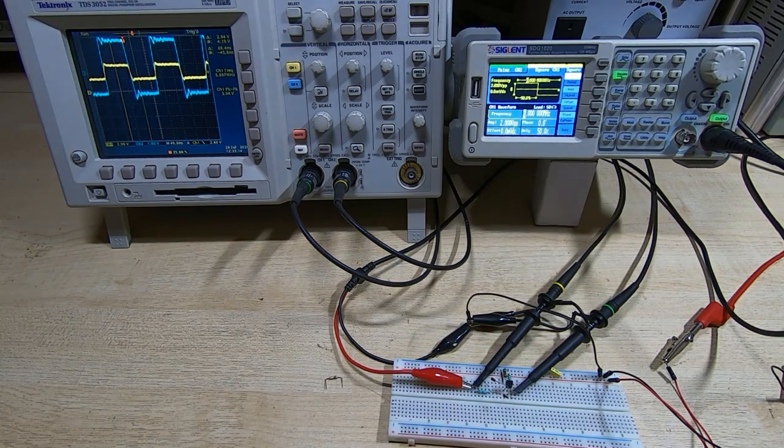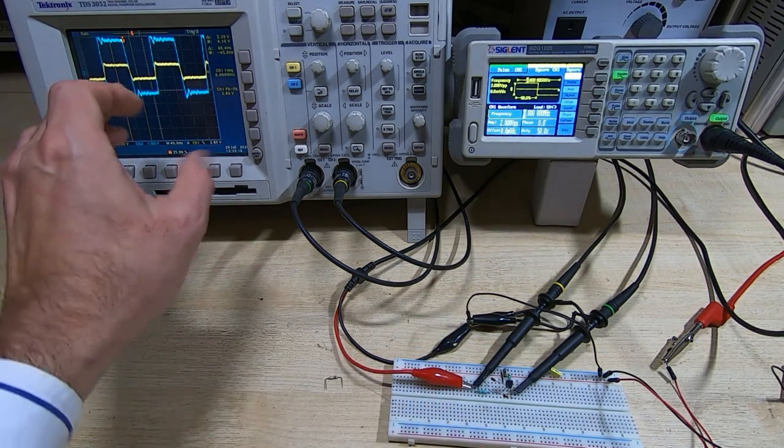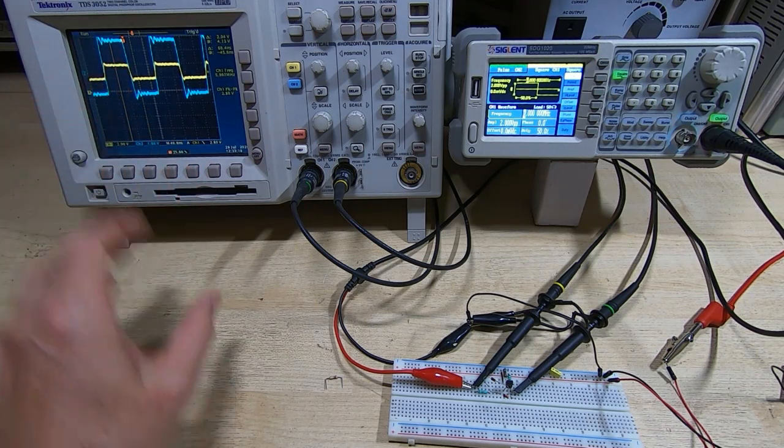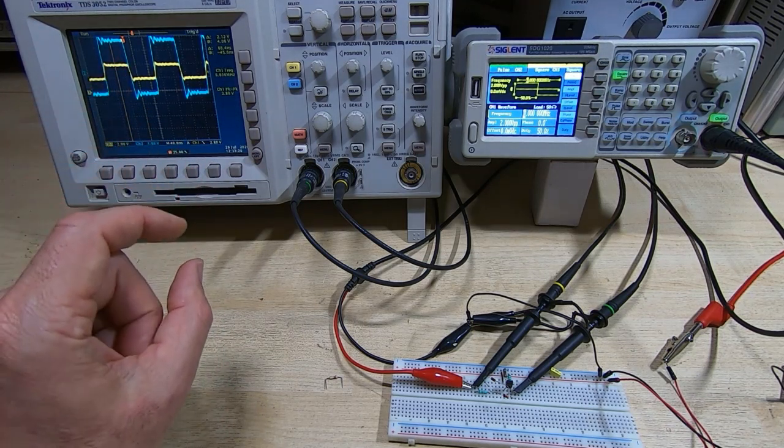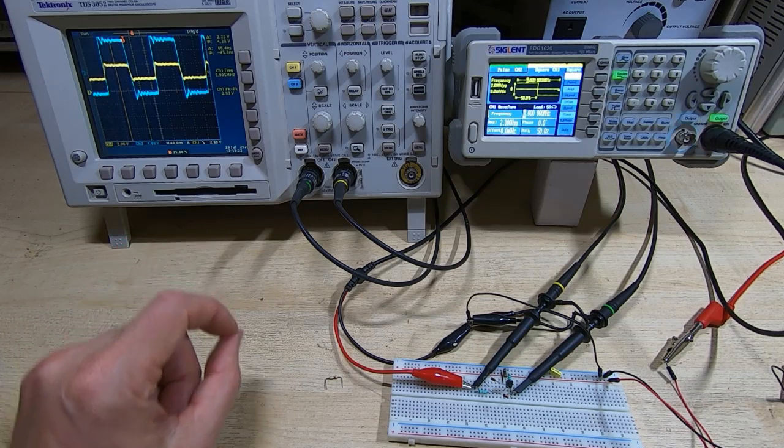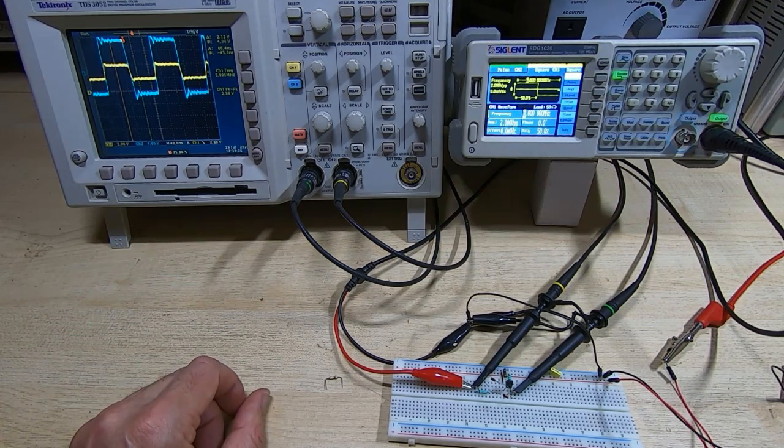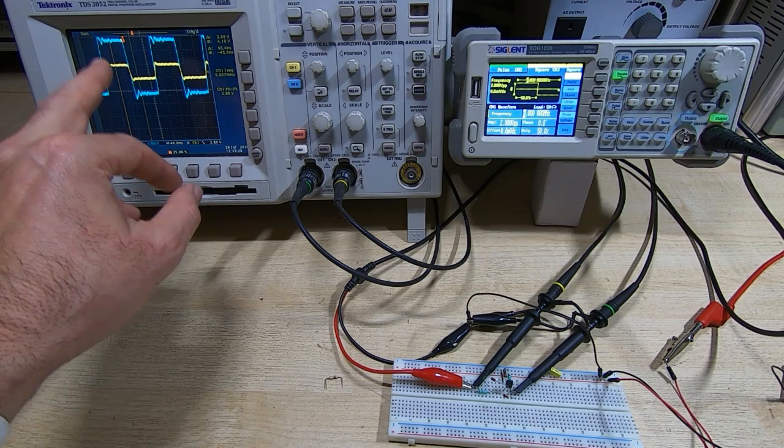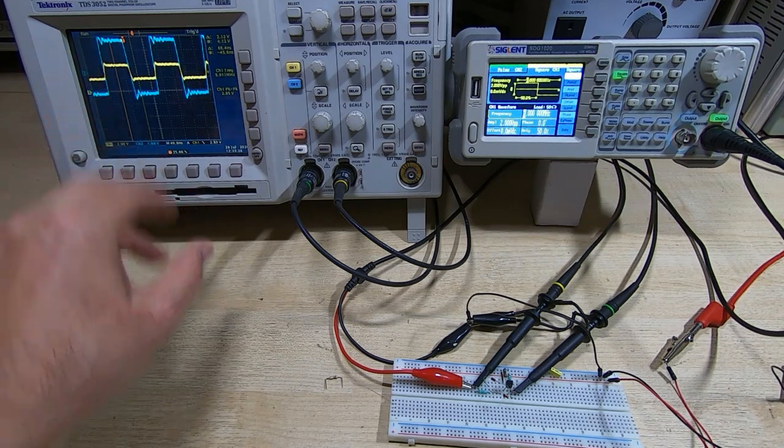All I've done is added the diodes, and the reason the amplitude has dropped is because the transistor is effectively being clamped at a proportion of its saturation. You can improve this depending on the type of diode that you use.